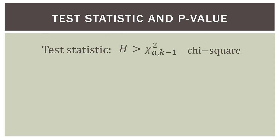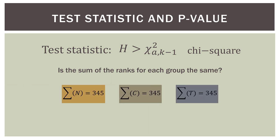All we do is compare our Kruskal-Wallis H to the chi-square value for our chosen alpha level and our degrees of freedom, which is K minus one — in this case three minus one, so degrees of freedom equals two. We're testing whether the sum of ranks for each group is the same. Our p-value is the probability that our chi-square is greater than H, where the chi-square critical value comes from a table, an online tool, or whatever you're using.